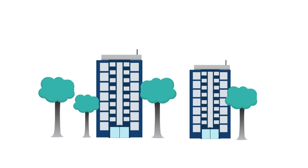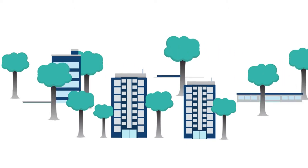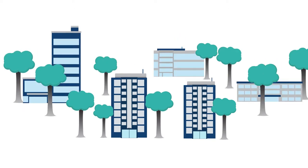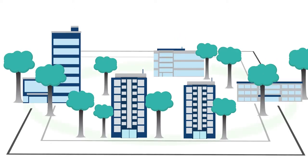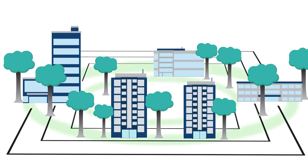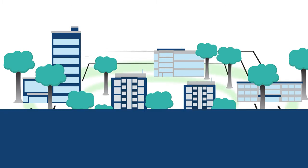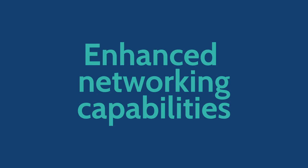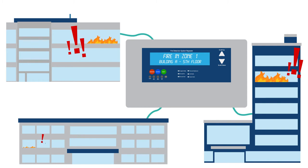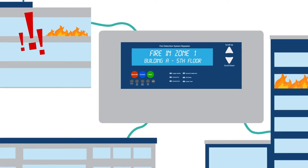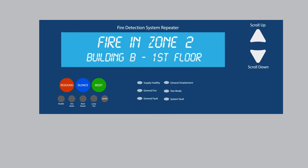Networking: multiple panels can be linked together to create a larger fire detection system, simplifying cabling — great for multi-building sites, schools and large complex buildings. Enhanced networking capabilities include a unit with programmable zonal text display, the RDU unit, which enables quick identification of the event across the entire network.